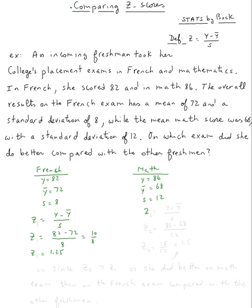Now z-score for the math test. The math test will be y minus y bar over s, which means 86 minus 68 over 12.